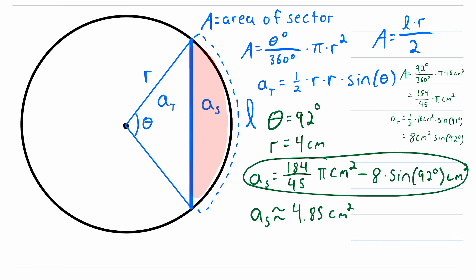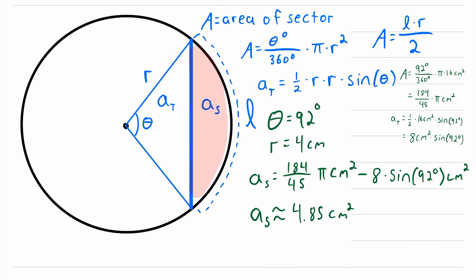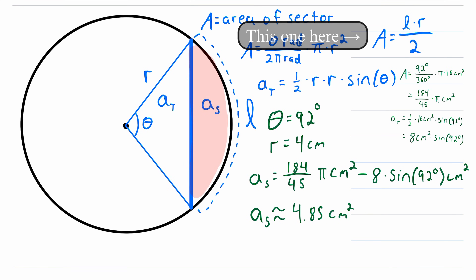If you have a central angle measured in radians, this same process works. You just adjust the formula: instead of theta degrees over 360 degrees, you use theta radians over 2 pi radians, since 2 pi is the total number of radians in a circle. And if instead of the central angle measure you had the length of the arc L cut by the chord, you would just use the other formula for the area of a sector.